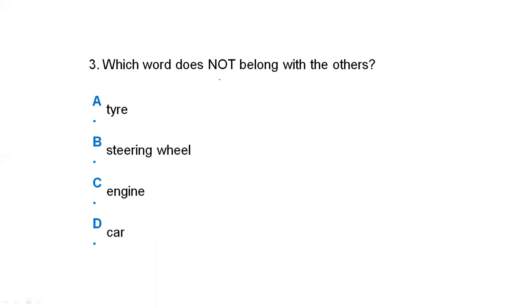Which word does not belong with the others? Option A is tire, option B is steering wheel, option C is engine, and option D is car. The first three — tire, steering wheel, and engine — are all parts of the car. But option D, car, is the car as a whole. So the difference is the car, and the correct answer is option D.